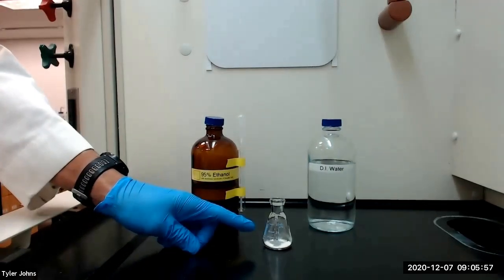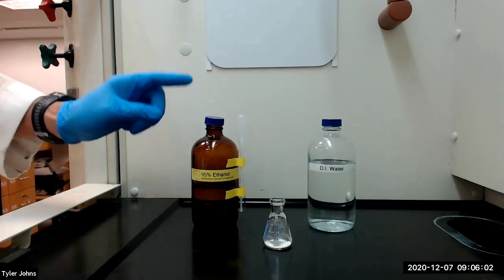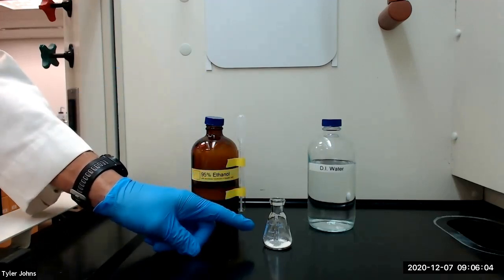After the thiamine hydrochloride has dissolved, we will next add 3.0 milliliters of 95% ethanol and swirl the solution until it is homogenous.